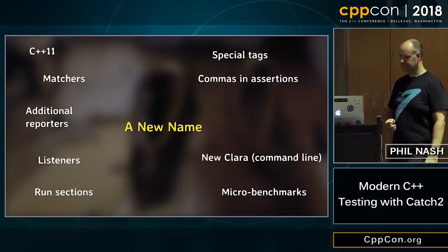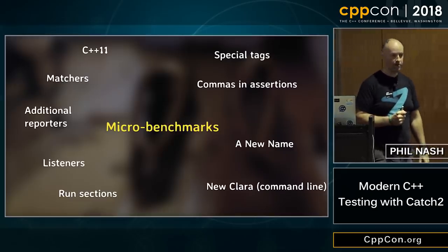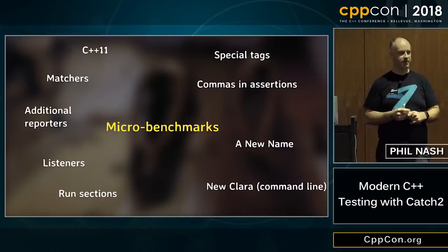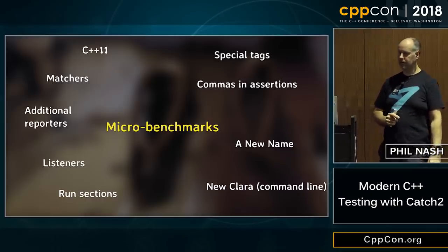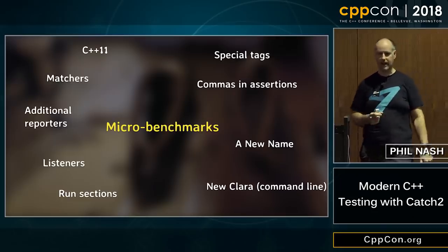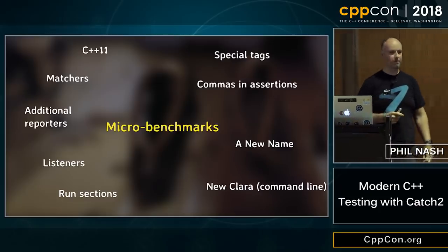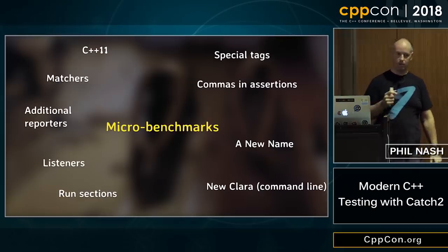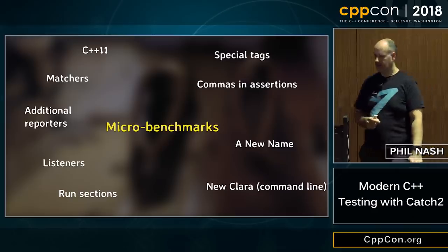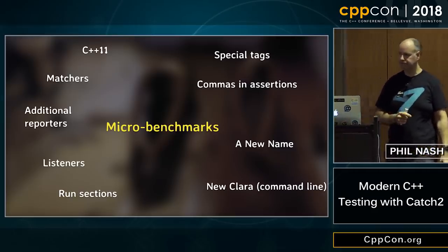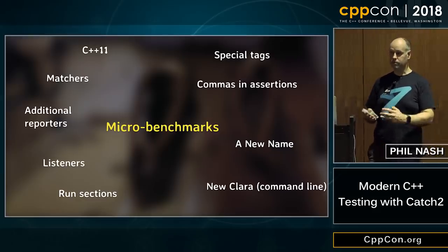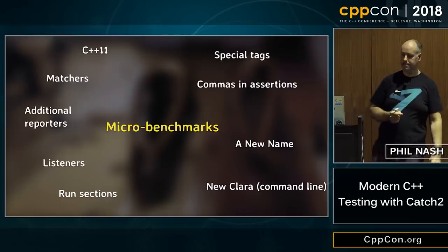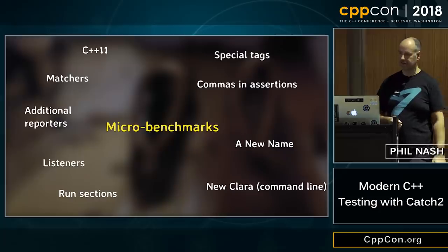Another feature I'll mention briefly is microbenchmarks. I started putting support in because I was doing a lot of benchmarking, mostly using a framework called Nonius. I wanted something similar but built into Catch that ran more like Catch, since there's a lot of shared infrastructure involved. It's not production ready yet — please don't rely on it. Interestingly, since I did that, the author of Nonius, Martino Fernandez (RMF), approached me about merging efforts — possibly merging a lot of the Nonius codebase into Catch. That's something for the future.